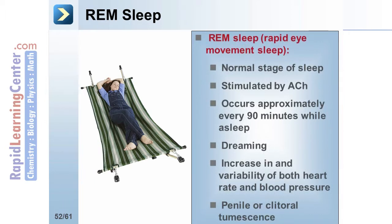REM sleep, or rapid eye movement sleep, is a normal stage of sleep stimulated by acetylcholine, which occurs approximately every 90 minutes while asleep. During REM sleep, dreaming occurs, there is an increase in and variability of both heart rate and blood pressure, and penile or clitoral tumescence occurs.